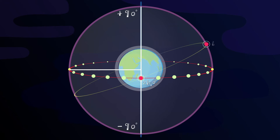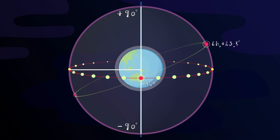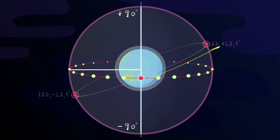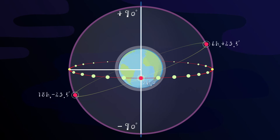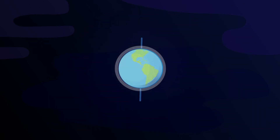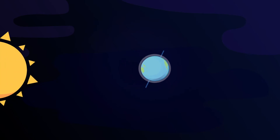The vernal equinox has a right ascension and declination of 0 hours and 0 degrees. The summer solstice: 6 hours and plus 23.5 degrees. The autumnal equinox: 12 hours and 0 degrees. And the winter solstice: 18 hours and minus 23.5 degrees. Because of the Earth's revolution, the sun's annual motion is observed in the direction of vernal equinox, summer solstice point, autumnal equinox, and winter solstice point. The Earth's revolution not only affects the sun's annual motion, but also brings about changes in seasonal constellations as well as the actual seasons.